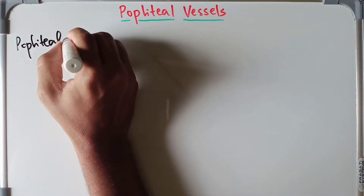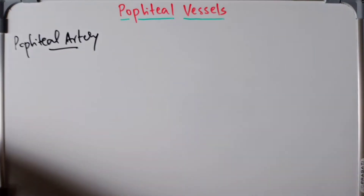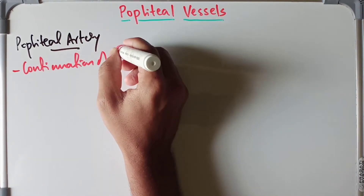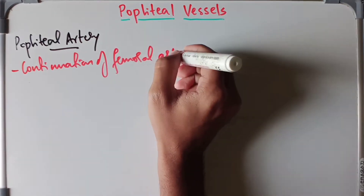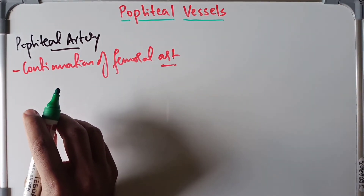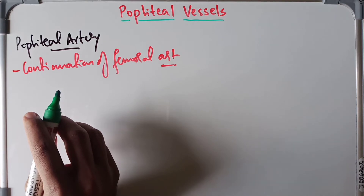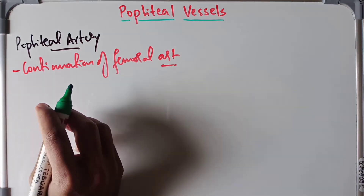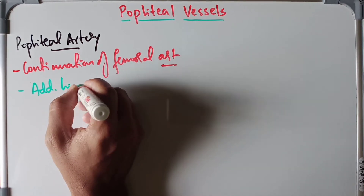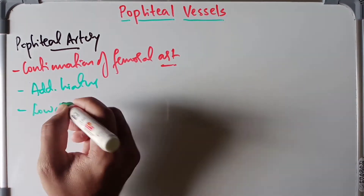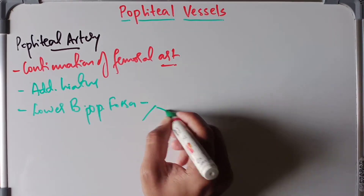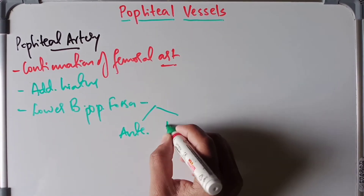The popliteal artery is a continuation of the femoral artery. It begins at the adductor hiatus and at the lower border of the popliteal fossa it terminates by dividing into the anterior and the posterior tibial arteries.